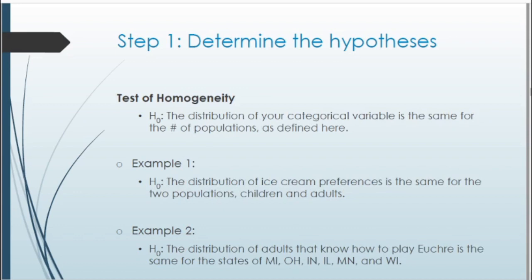For the test of homogeneity, the null hypothesis states that the distribution for our categorical variable is the same for however many populations we are looking at. For the ice cream example: the distribution of ice cream preferences is the same for the two populations — children and adults. For the Euchre example: the distribution of adults that know how to play Euchre is the same for Michigan, Ohio, Indiana, Illinois, Minnesota, and Wisconsin.